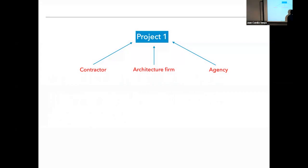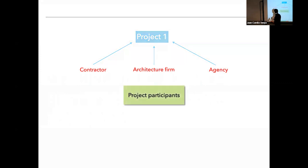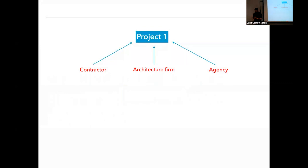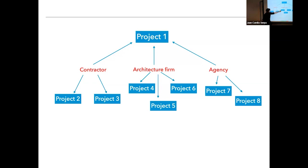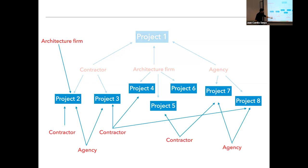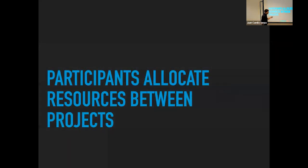But when you think about it — consider a given project with multiple participants: a contractor, an architecture firm, a design agency. These project participants are usually involved in other projects simultaneously. This contractor could be doing multiple projects at the same time, the architecture firm likewise, and those other projects have other participants collaborating. So we're starting to have a network of projects, because participants strategically allocate resources between each project.